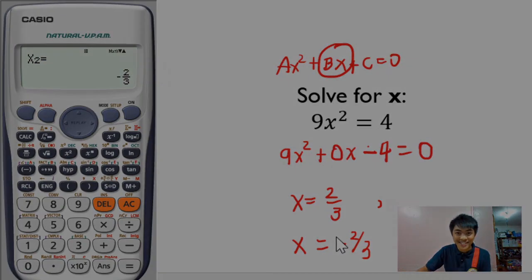Yung a natin is 9, yung b is 0, and then yung constant term is negative 4. Press mo yung equals. Sinolve na ni calculator yung solutions ng quadratic equation na yan. The solution is 2 thirds at saka negative 2 thirds.